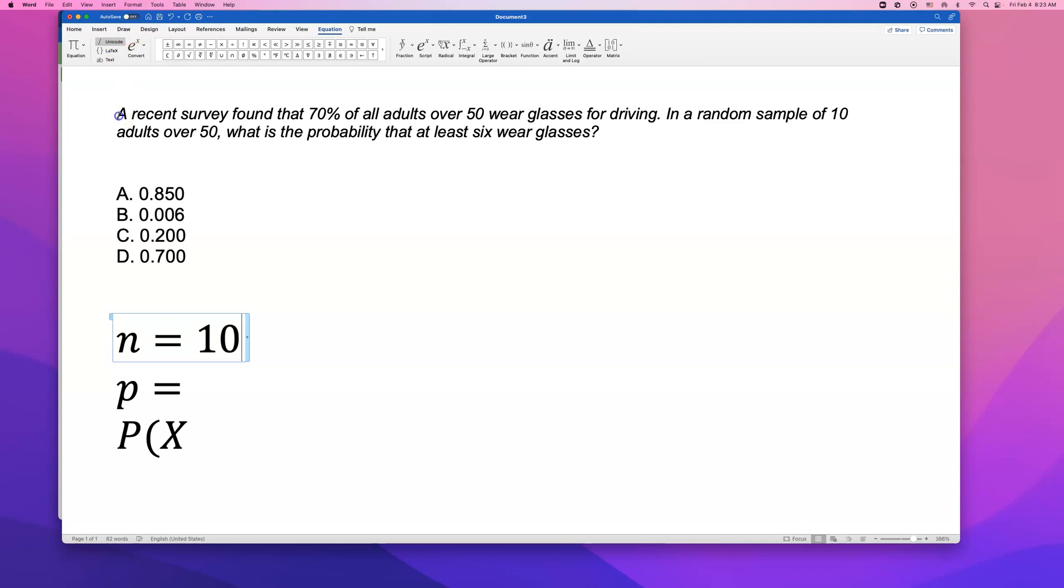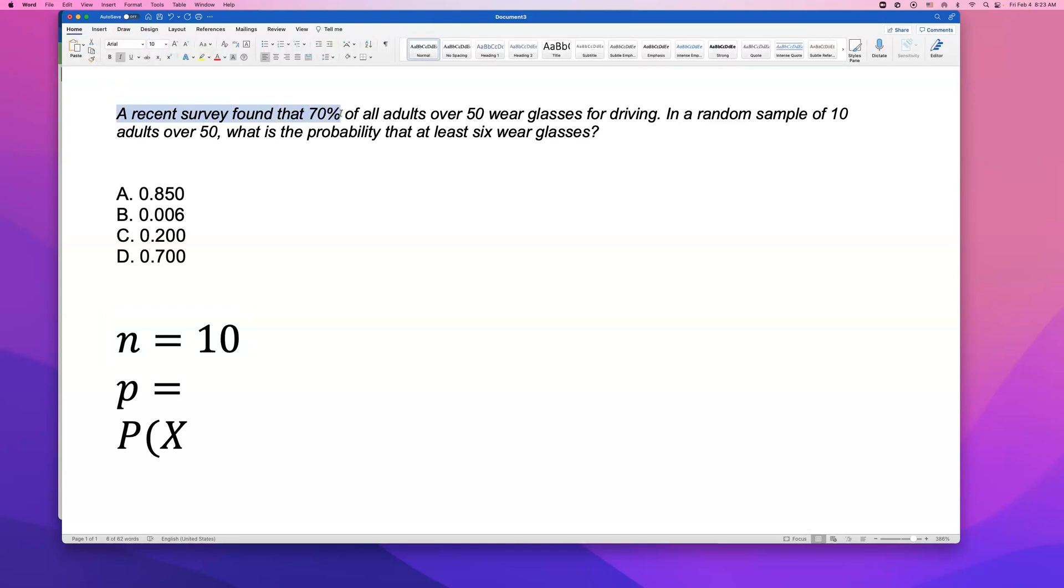So if we don't have this recent survey result, I would say there's like a 50-50 chance that they either wear glasses or they don't wear glasses. But the survey says like more than half of them wear glasses when they're driving, when we're looking at the population of 50 years or older. So the probability is not 0.50 but actually it's 0.70 because that probability was given to us from that recent survey.